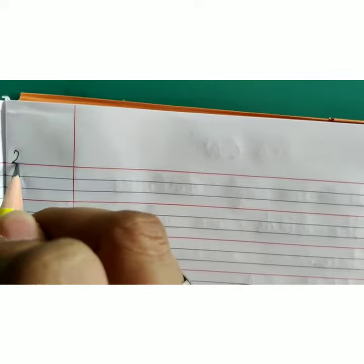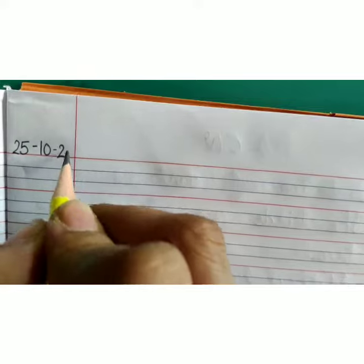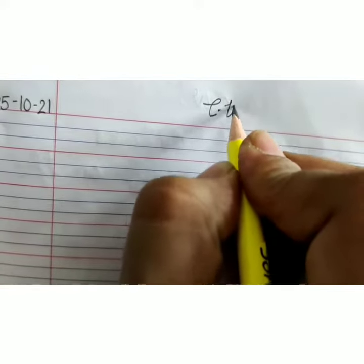Today we will draw a boat at sea in fold and notebook. Open your notebook and write down today's date, 25-10-21, at the top write down classwork.